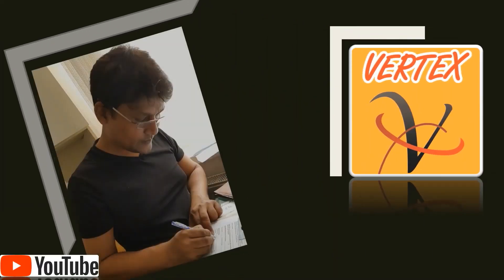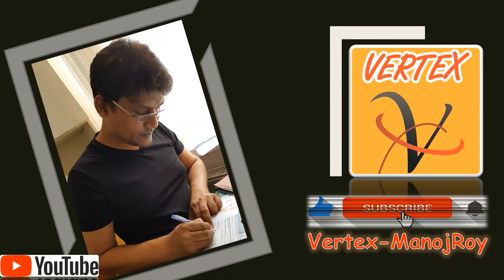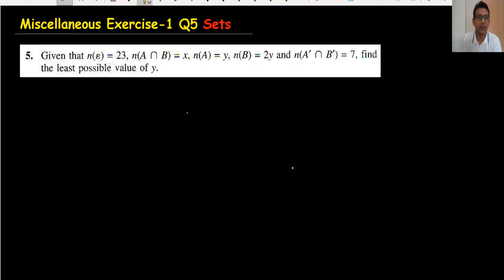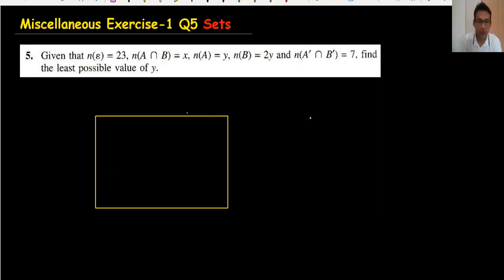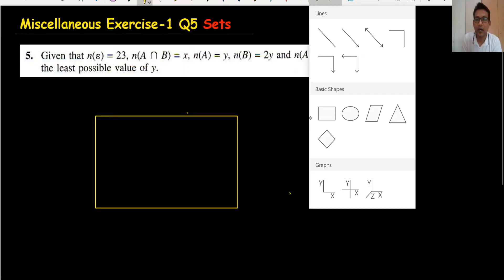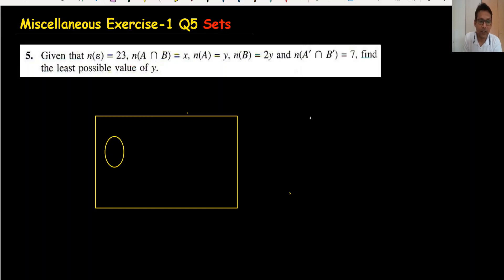Hi everyone, welcome back to my channel. For miscellaneous exercise question five, we have these two sets, so let's draw the Venn diagram first. The intersection is x, and we need to set all the values.